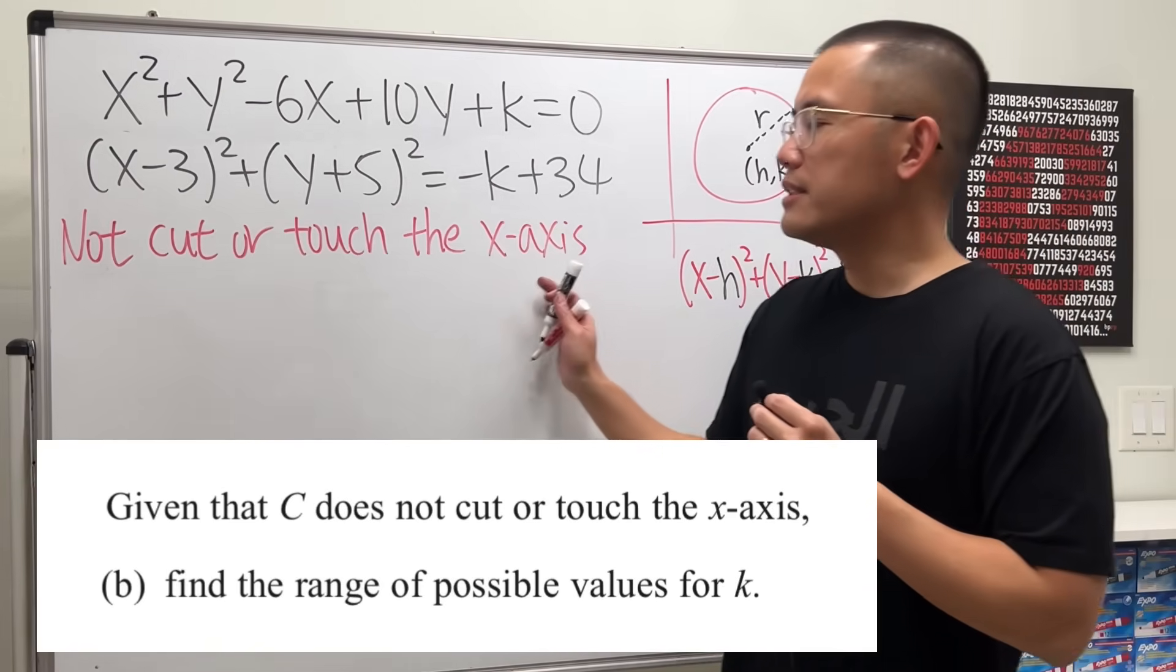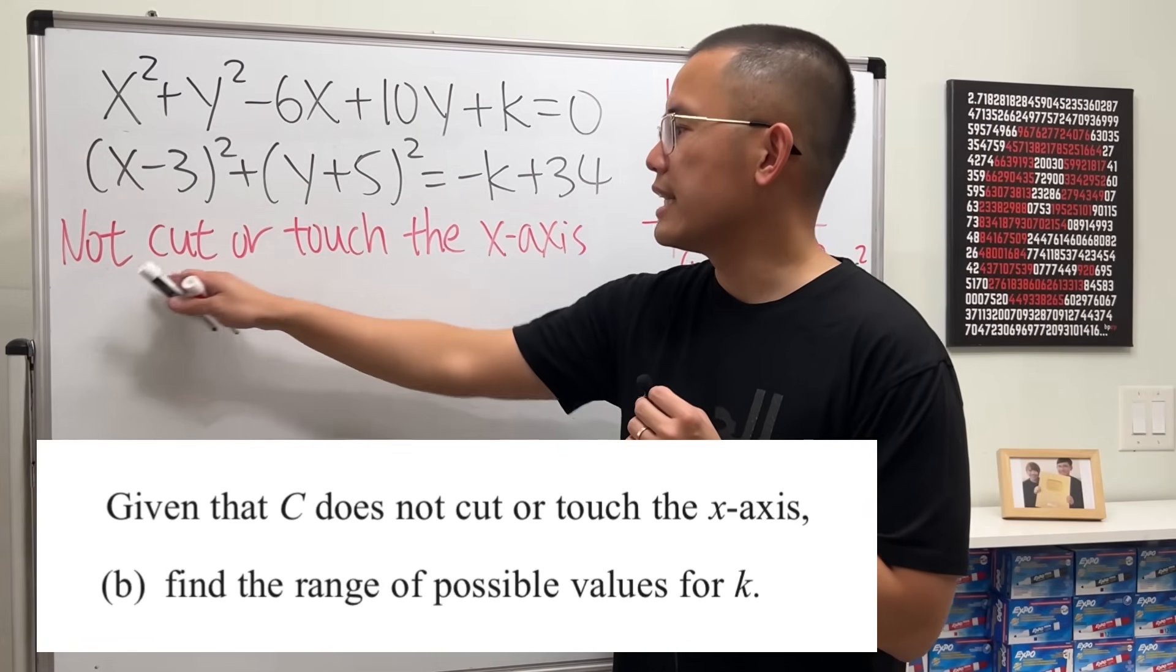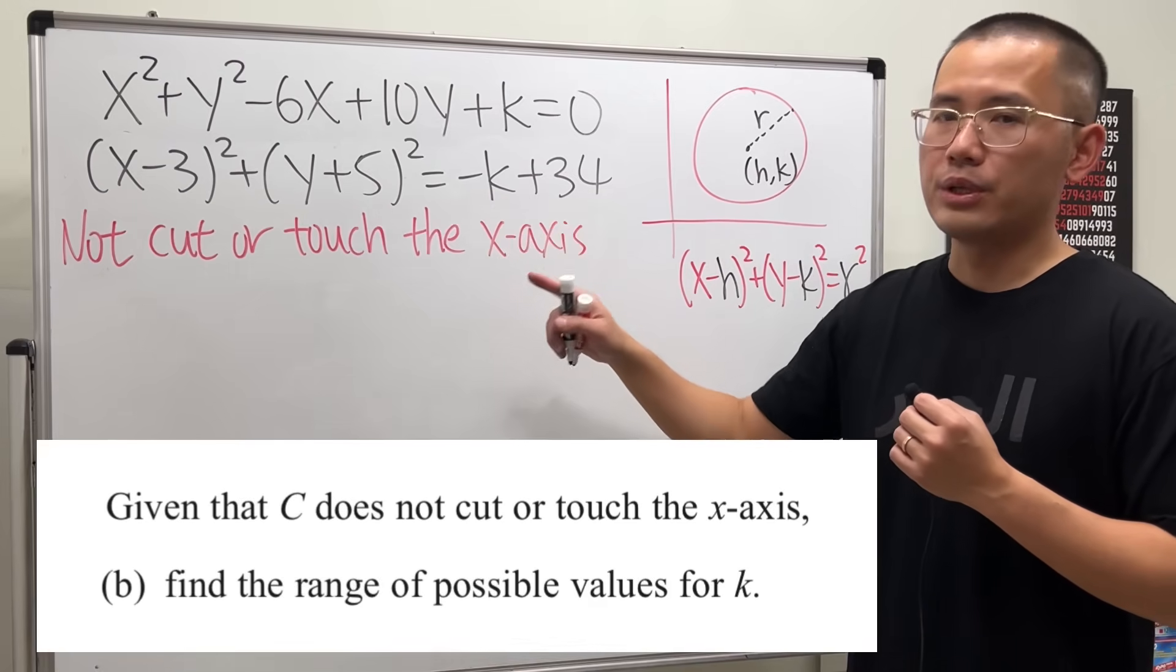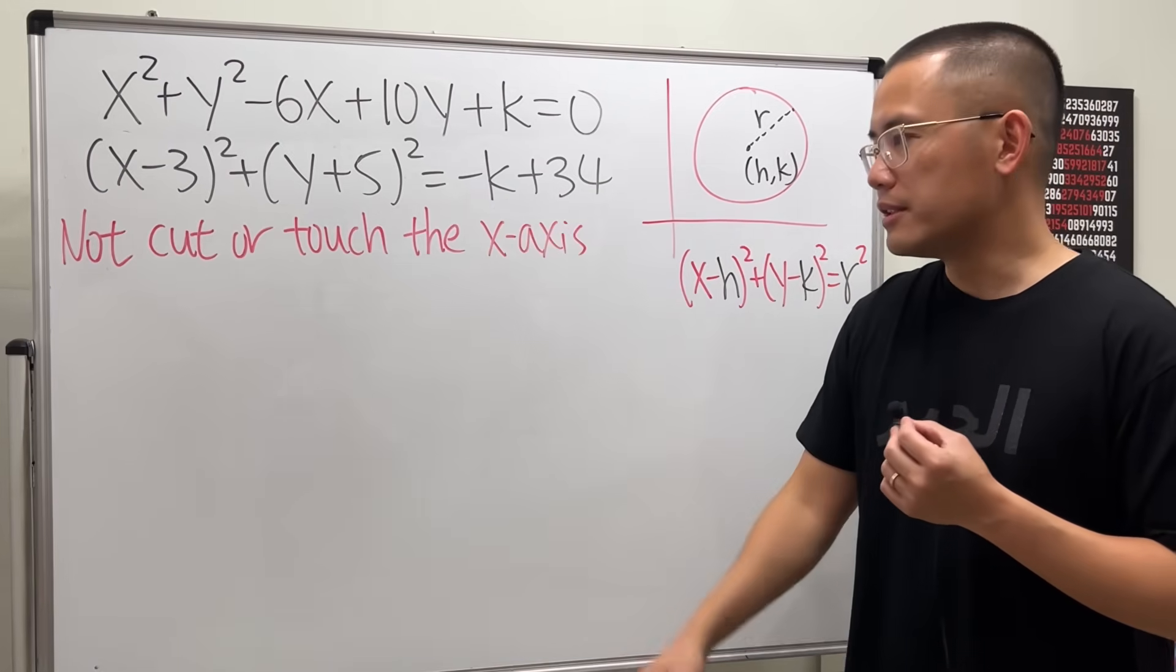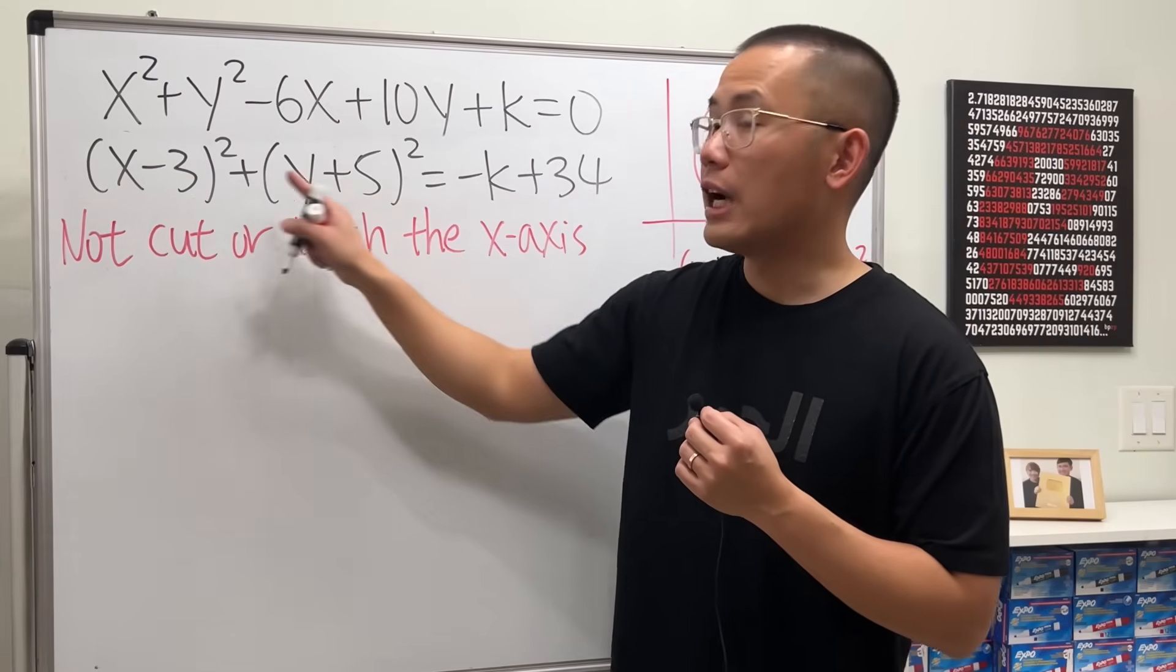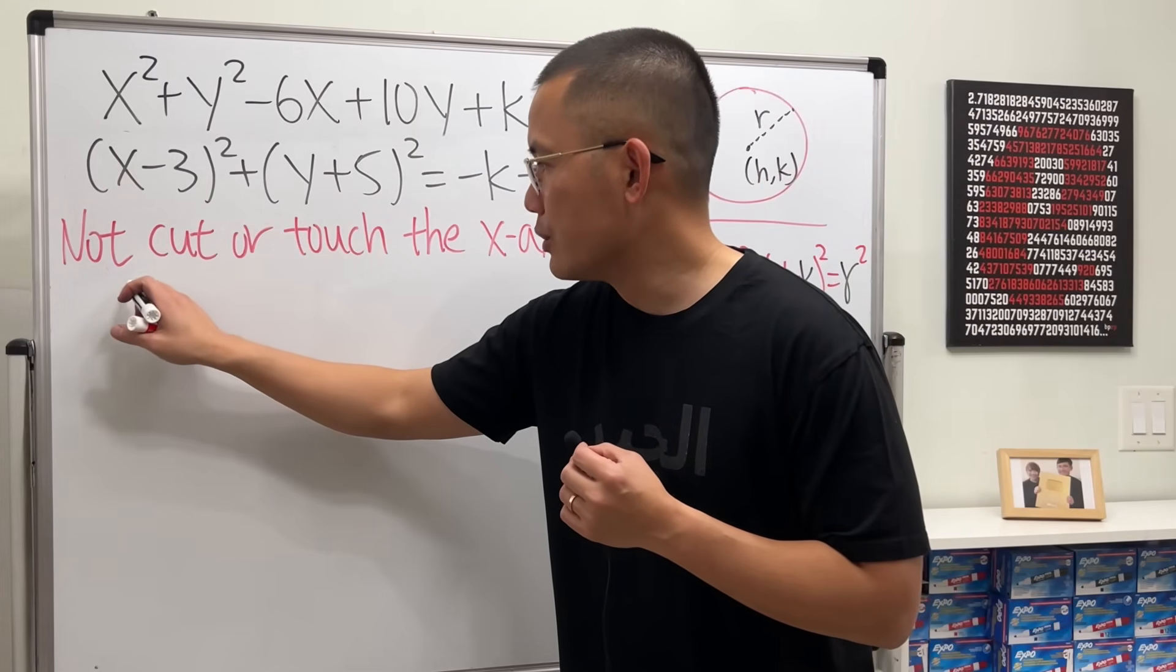Now, part b is a little bit trickier. Right here it says that we don't want the circle to cut or touch the x-axis. And our goal is to find out all the possible k value that will make it happen. So here's the deal. From earlier, we know the center is at 3, negative 5. So let's take a look at the quick picture.